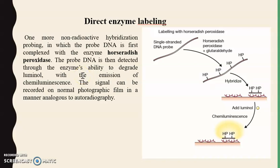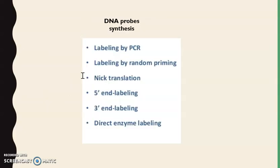This covers all the non-isotopic labeling of probes and which methods can be used to label DNA or RNA probes or oligonucleotides. Now we will talk about DNA probe synthesis. DNA probes are double-stranded small segments of DNA, and synthesis or labeling can be done by PCR, by random priming, by nick translation, by 5-prime end labeling, 3-prime end labeling, and direct enzyme labeling.